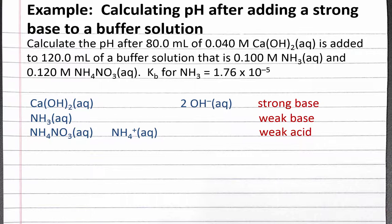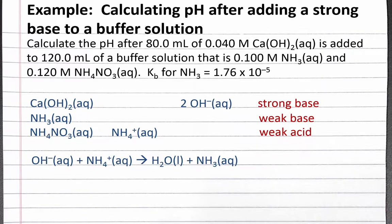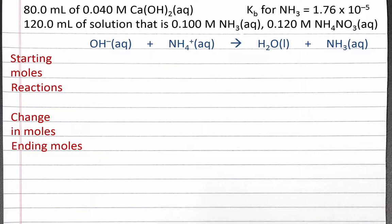So we can write out the net ionic equation for that reaction: hydroxide will react with ammonium to produce water and ammonia. Since we're adding a strong base to a weak acid, it will react to completion. Next, we'll need to determine what is left over in solution after the reaction is completed. When a reaction goes to completion, we can use a limiting reagent table to determine what the limiting reagent is and what's left over in solution.